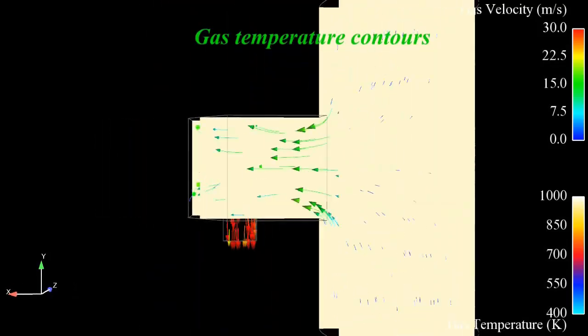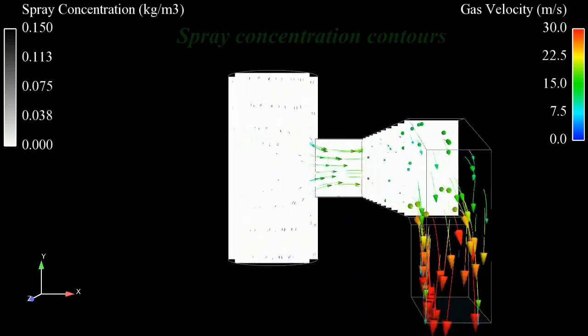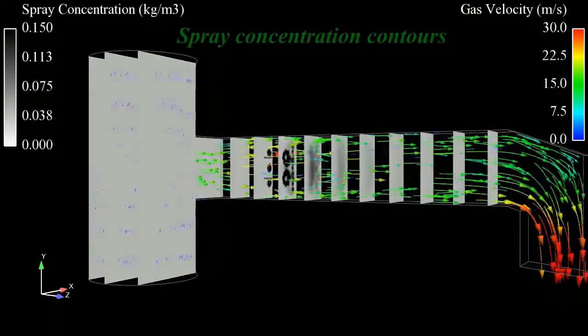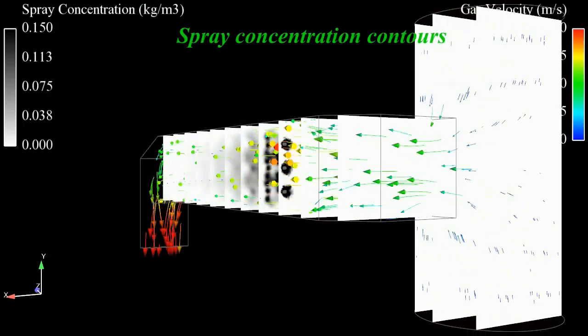Temperature contours and visualization of the spray plumes are helpful to understand how much of the spray is in contact with the process stream. Particle tracking of the process stream is also helpful to visualize the temperature reductions.